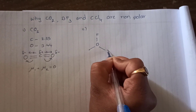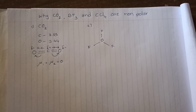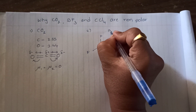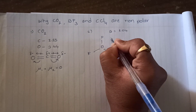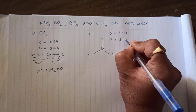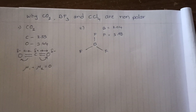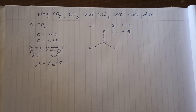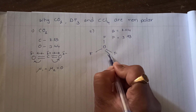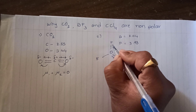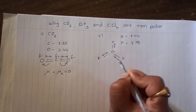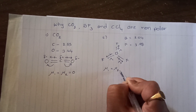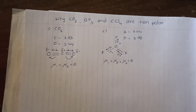The structure of boron trifluoride is trigonal planar. If you look at the electronegativity difference between the atoms: boron's electronegativity is 2.04 and fluorine's electronegativity is 3.9 — highly electronegative. If you only consider the electronegativity difference between the atoms you would assume it is a polar molecule, but it is not. The reason is again the same — because of its symmetrical structure, the dipole moments act in three directions: μ₁, μ₂, and μ₃. The net dipole moment of this molecule becomes zero because of its symmetrical structure.